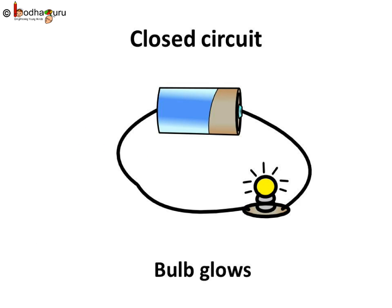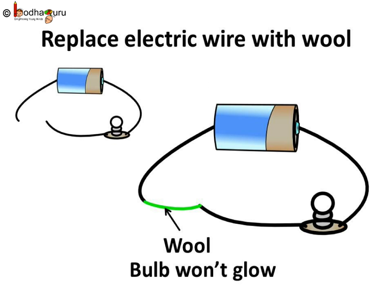When we used electric wire in the circuit, the bulb glowed. What if we replace a part of the circuit with wool — will it glow? As we see, it doesn't.